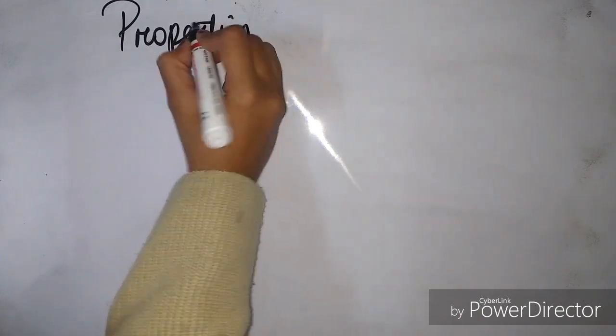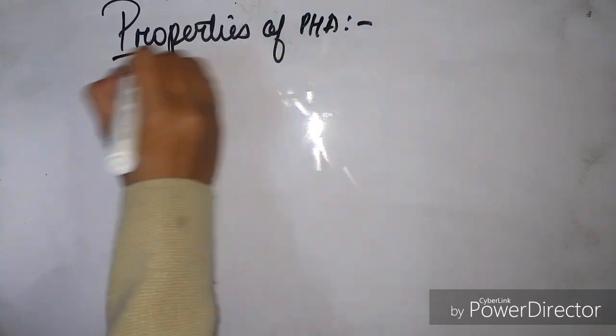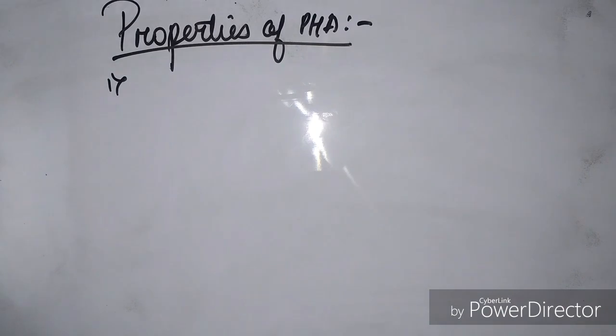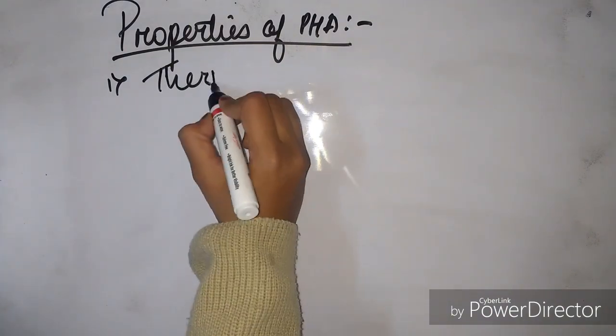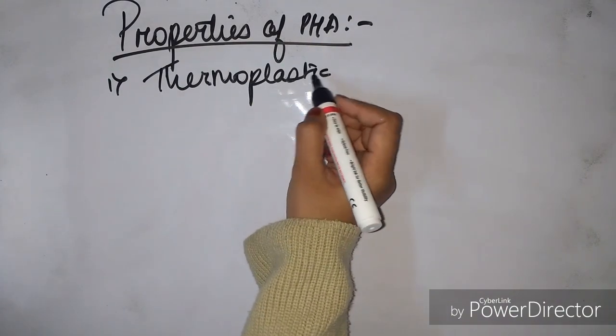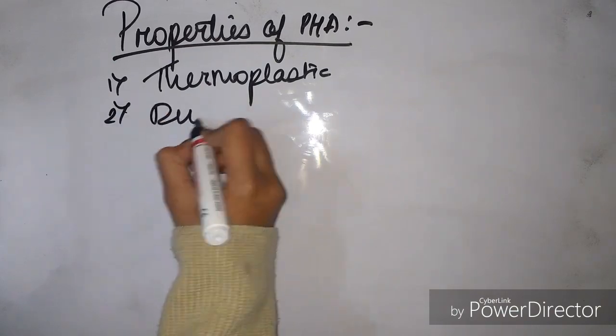The properties of PHA polyhydroxyalkanoates are extensive. A few I will list today are: first, they are thermoplastic, so they can be molded between the temperature of 40 to 180 degrees Celsius. Second, they are ductile.